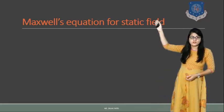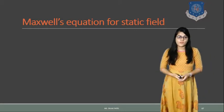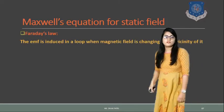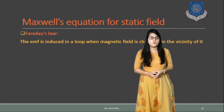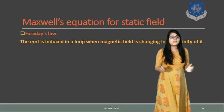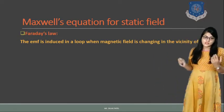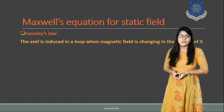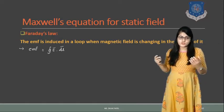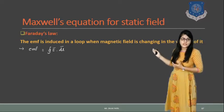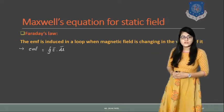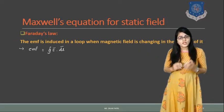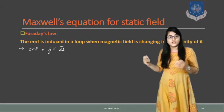For the static field, the first equation is Faraday's law. The statement of Faraday's law is: EMF induced in a loop is when the magnetic field is changing in the vicinity of it. Means, if the magnetic field is changing, then EMF is introduced in that particular circuit. The electromotive force is given by the integration of E dot dL, where E is electric intensity, over a complete closed path.